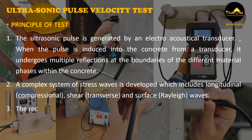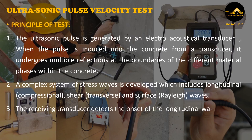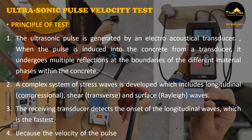The receiving transducer detects the onset of the longitudinal waves, which is the fastest. Because the velocity of the pulses is almost independent of the geometry of the material through which they pass and depends only on its elastic properties, the pulse velocity method is a convenient technique for investigating structural concrete.